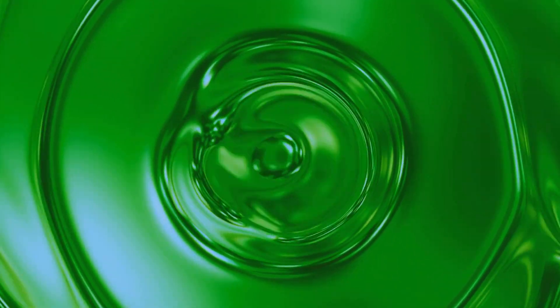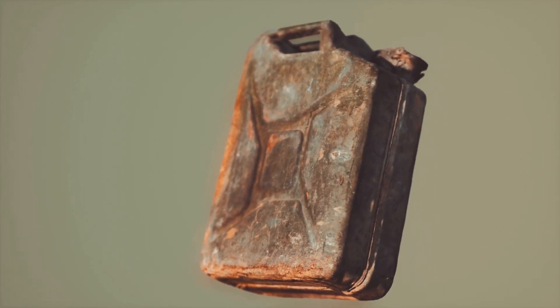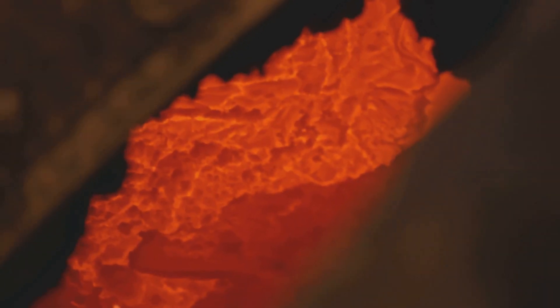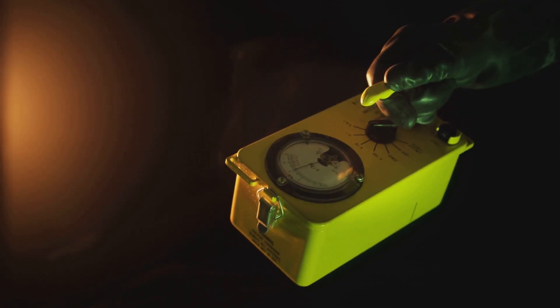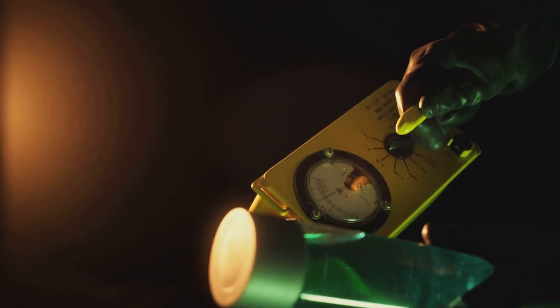When it's freshly made, plutonium is a bright silvery metal, but it quickly tarnishes to a dull gray when exposed to air. It's also surprisingly warm to the touch. This is because it's highly radioactive, and as it decays, it releases a steady stream of energy in the form of heat.